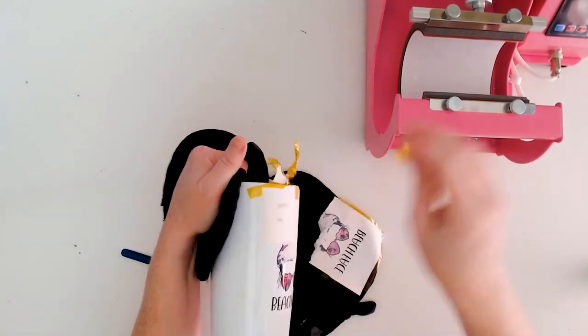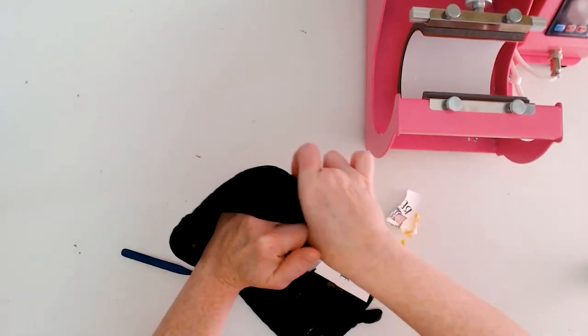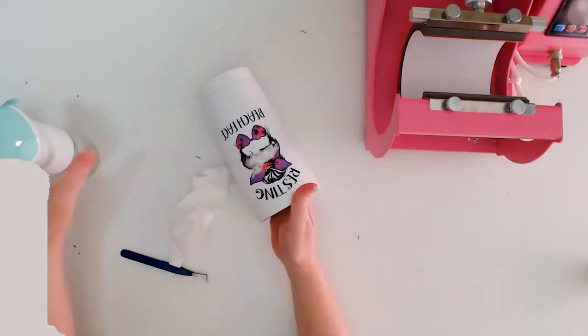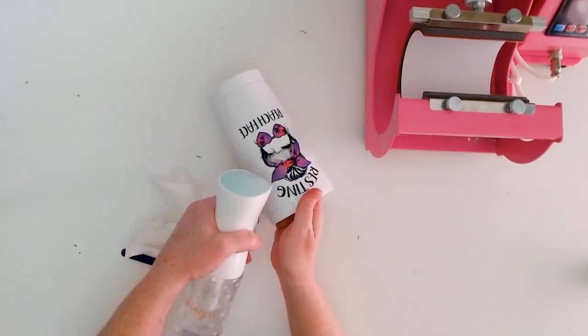After pressing, carefully remove the sublimation paper. If you've got some sublimation paper still left on the mug, you can just use some water and your finger to rub it off.